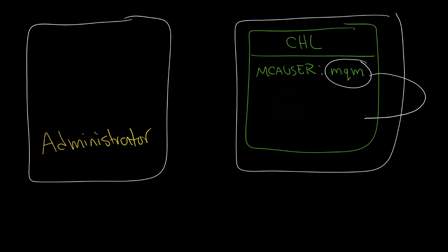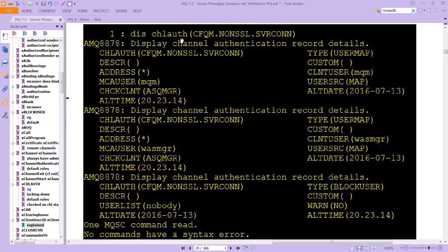But then when messages start flowing, you can convert the user that's running the process to a particular user through the user map, and all of that happens through the channel authentication records. So imagine that your channel authentication record looks like this.